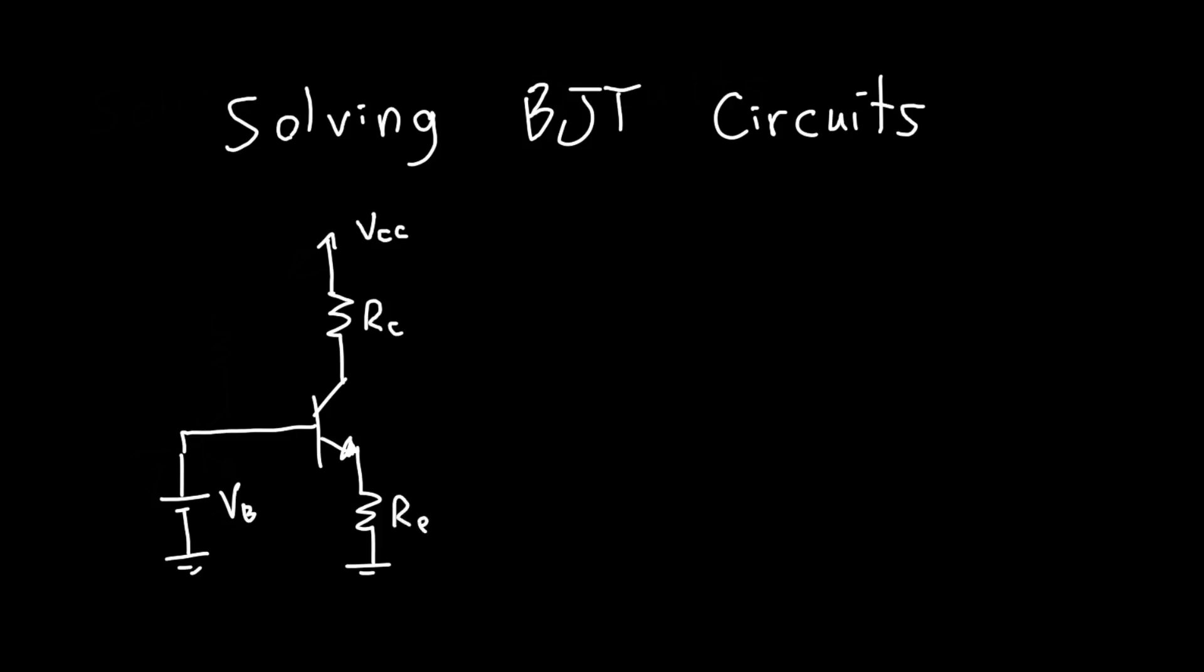Let's say for this problem that RC and RE are equal to each other and they're both equal to 1 kilo ohm. Let's say that VB is 1.5 volts and VCC is 3.3 volts. We want to find IC, the collector current here.